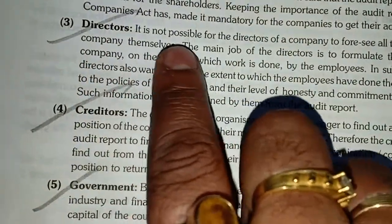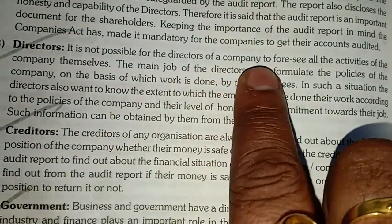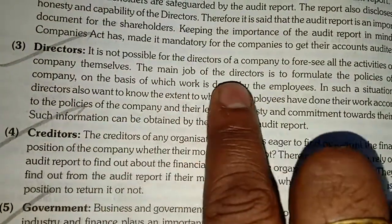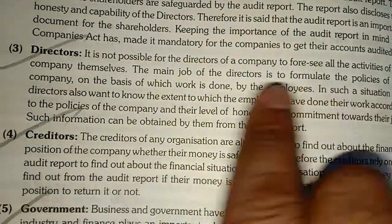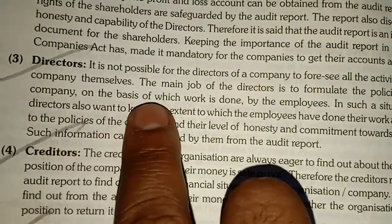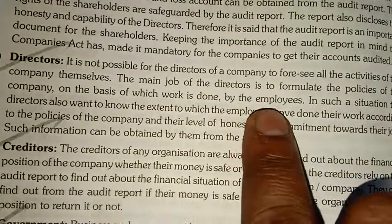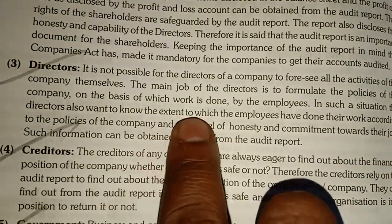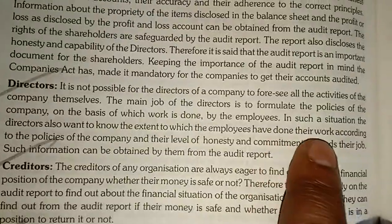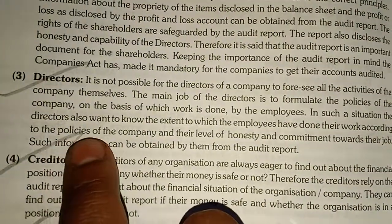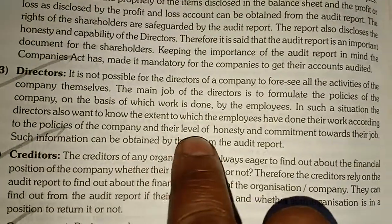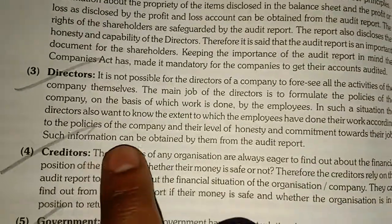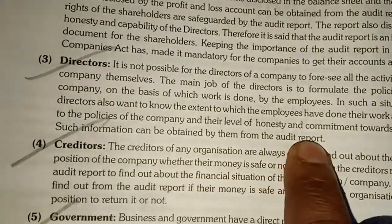Directors — it is not possible for the directors of a company to oversee all the activities of the company themselves. The main job of the director is to formulate the policies of the company on the basis of which work is done by the employees. The director also wants to know the extent to which the employees have done their work according to the policies and their level of honesty and commitment. Such information can be obtained from the audit report.